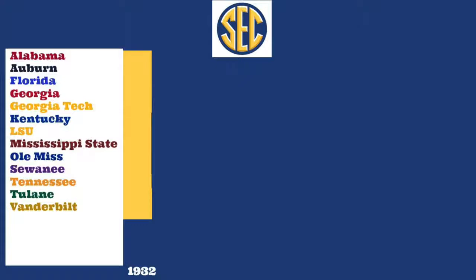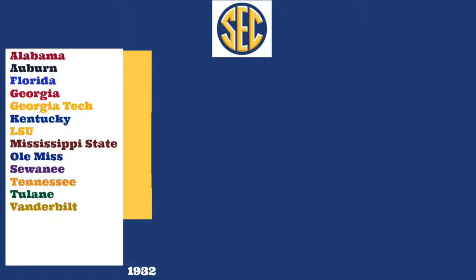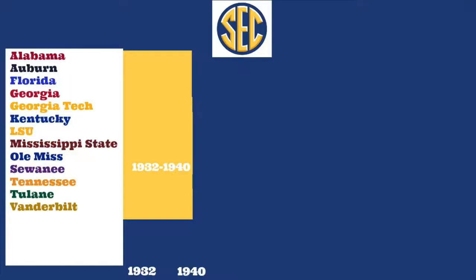In 1932, the SEC was formed when 13 schools left the SOCON: Alabama, Auburn, Florida, Georgia, Kentucky, LSU, Ole Miss, Miss State, Tennessee, Tulane, Sewanee, Georgia Tech, and Vanderbilt. In 1940, Chicago de-emphasized football, making the Big Ten the Big Nine again, and Sewanee left the SEC to go independent.